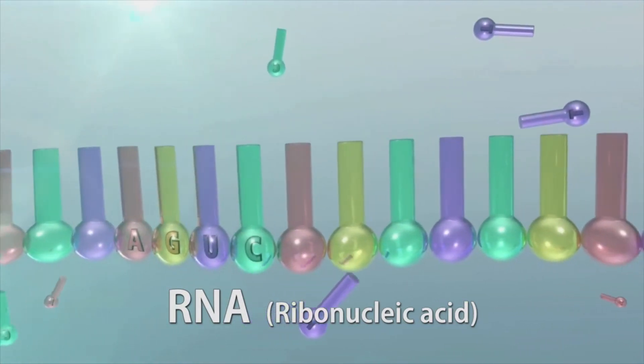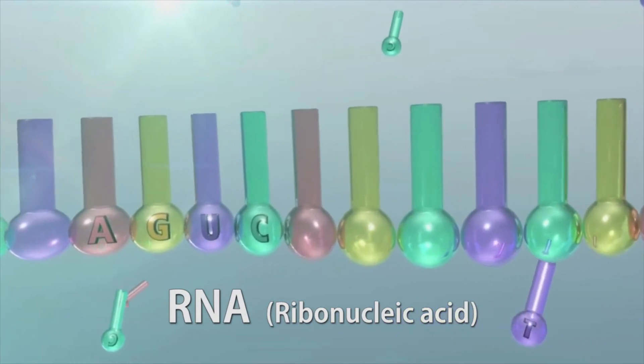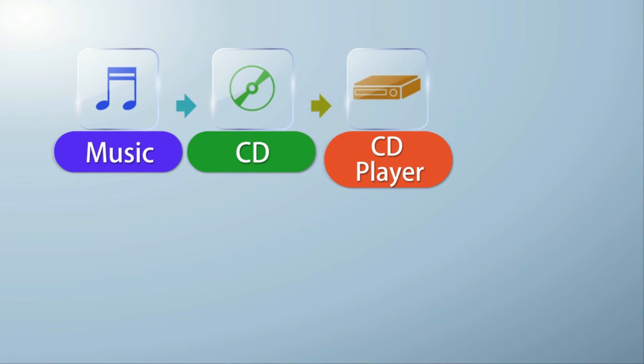Think about how we listen to music stored on a CD. To create a music CD, the elements of music—rhythm, melody, and harmony—are converted into digital form and encoded onto a CD. When this CD is read by a CD player, we are able to enjoy the music that has been encoded onto it.